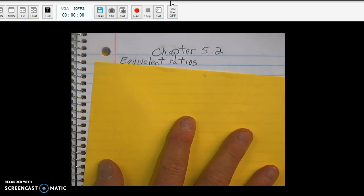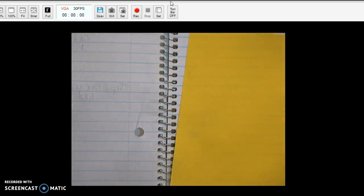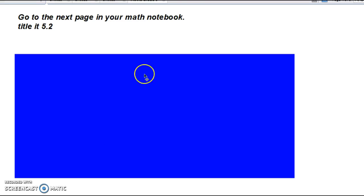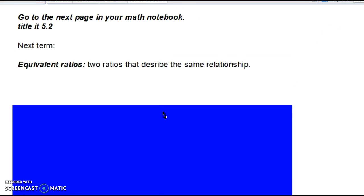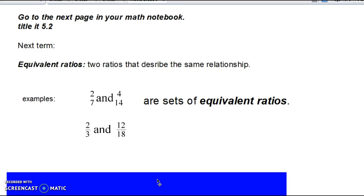Equivalent Ratios are two ratios that describe the same relationship. Examples: two-sevenths and four-fourteenths, and two-thirds and twelve-eighteenths, are sets of equivalent ratios.